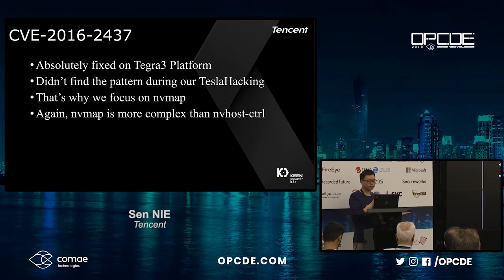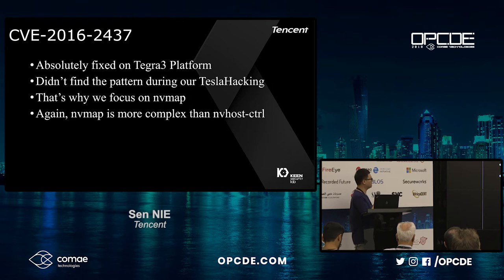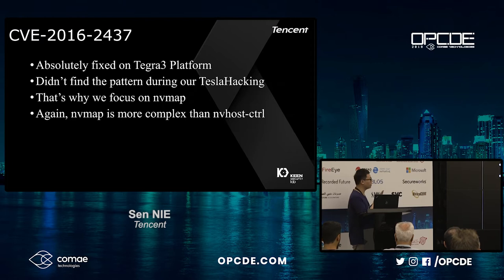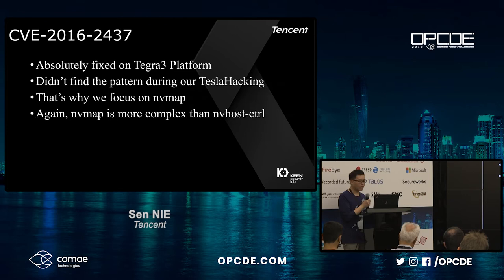Interestingly, this bug could be directly exploited on the Tesla infotainment system, but it is fixed on the Tegra 3 platform. Someone found this vulnerability and reported it to Tesla, so I think they fixed all similar patterns. I cannot find the same pattern in NVHost control, so I moved on to the NVMap module.